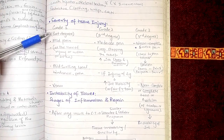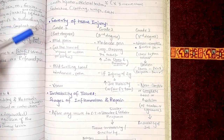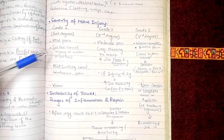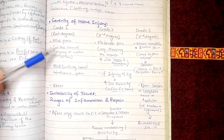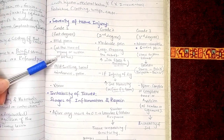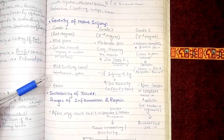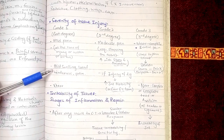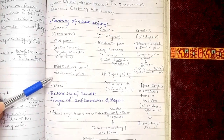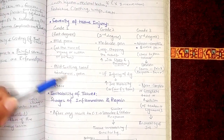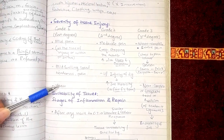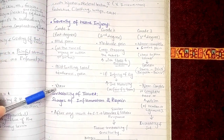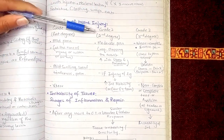In grade one, there is only mild pain and this pain occurs at the time of the injury or within the first 24 hours. There is also mild swelling and local tenderness, but there is no tear. The key point in grade one is mild pain with no tear.